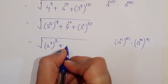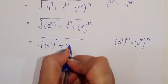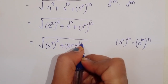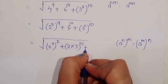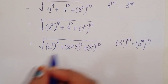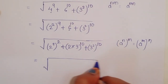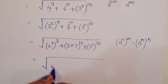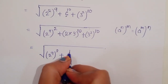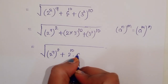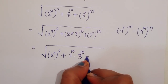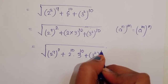We write 6 in the form of 2 times 3, so 6 power 10 becomes 2 times 3 power 10. This gives us 2 power 9 power 2 plus 2 times 3 power 10 plus 3 power 2 power 10.